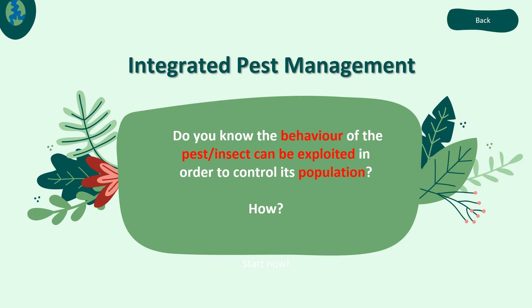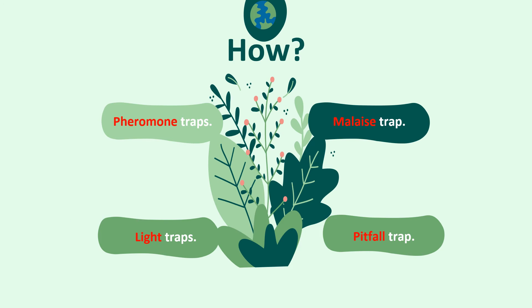For the next part is integrated pest management. I want to ask you: do you know that the behavior of pests or insects can be exploited in order to control their population? To control the population of insects, we will need a pheromone trap, light trap, pitfall trap, and malaise trap.